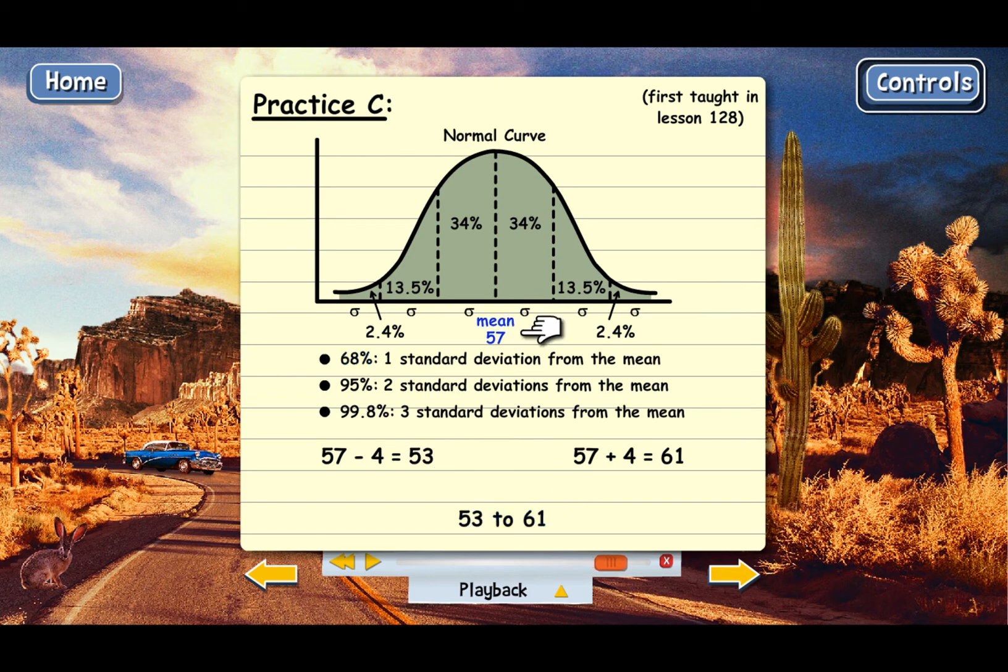And the reason we can predict this is we know the mean, but then we also know the standard deviation. Remember, that is a measure of how spread apart the numbers are. If the standard deviation is really big, what if it were 40 instead of 4? Well, then to get 68% of the numbers, we'd have to go really far above the mean and really far below the mean.